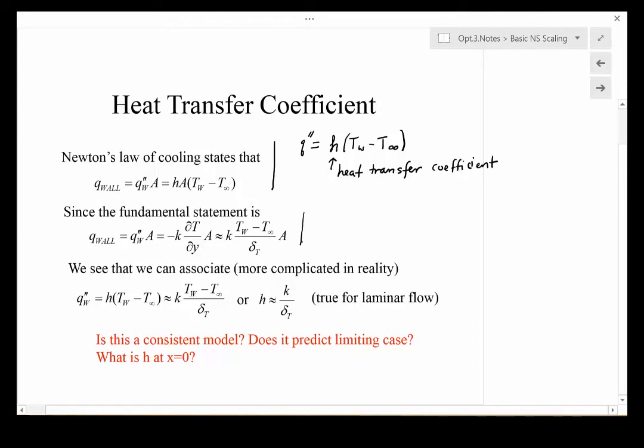The fundamental statement is that q_wall equals k(T_w - T∞)/δ_T. In laminar problems, if we equate these two descriptions, we would find that the heat transfer coefficient looks like k/δ_T. We'll find this isn't true for turbulent flows, but it's a reasonable approximation for laminar flow. There is a parameter called the Nusselt number, which is the heat transfer coefficient times a characteristic length scale divided by the thermal conductivity, that will characterize these types of problems.